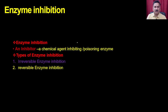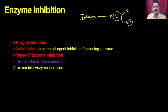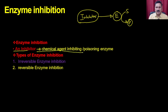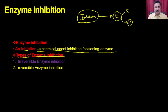Once you have developed an inhibitor, it is going to block the enzyme so the enzyme will not be able to convert the substrate into the product. An inhibitor is a chemical agent which blocks the enzyme in such a way that it cannot convert substrate to product. Depending on the type of inhibition, it could be irreversible or reversible.